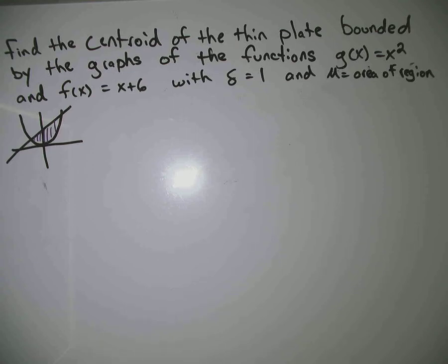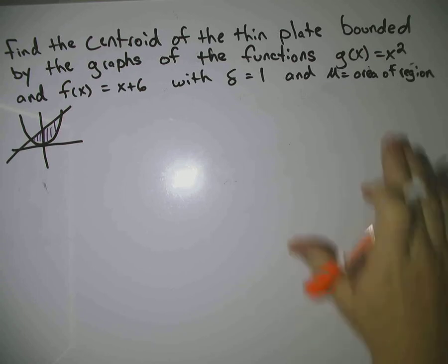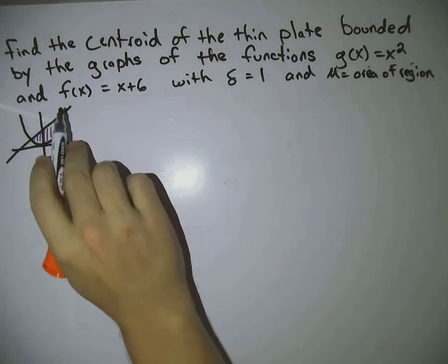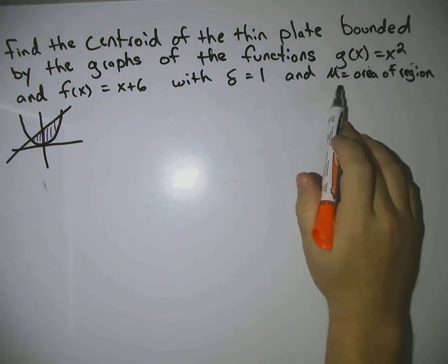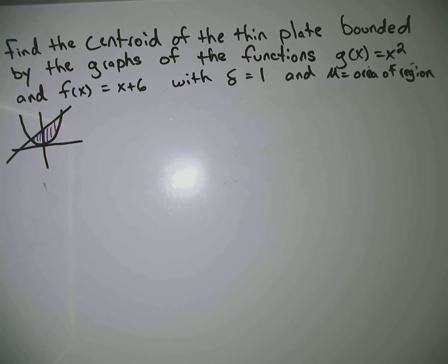In this video we're going to find the centroid of a thin plate bounded by the graphs of the functions g of x equals x squared, f of x equals x plus 6, and we've got sigma equals 1, and the mass is going to be the area of the region. So I've got the graph here of the bounded region, the parabola, and the line there.